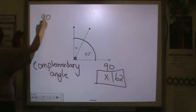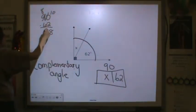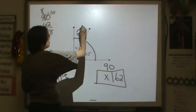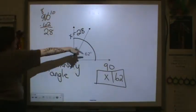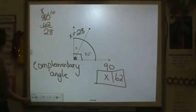So here if I take 90 and I subtract 62, I can find that missing part. Make sure you regroup. So x is equal to 28, because 28 and 62 gets me that complementary angle that is 90 degrees.